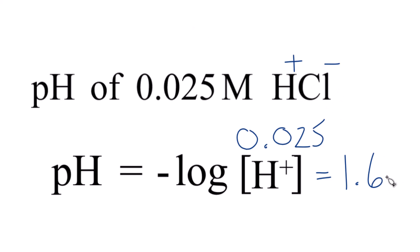So there you go. This is Dr. B looking at the pH of our 0.025 molar solution of HCl. The answer, 1.6. Thanks for watching.